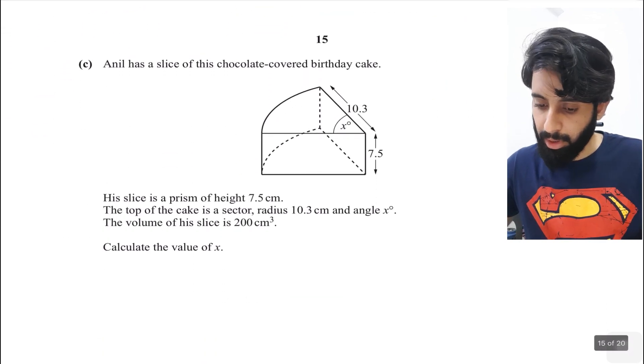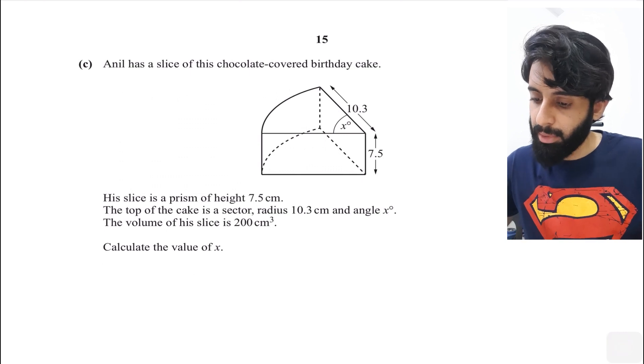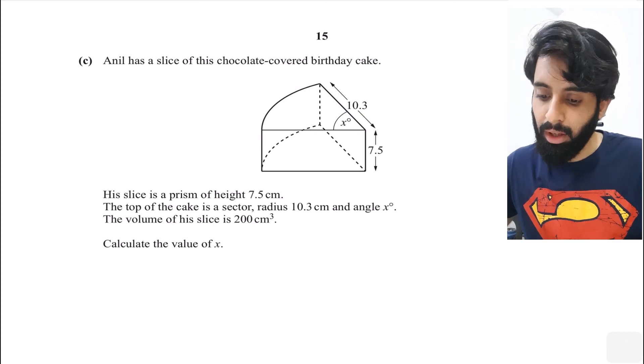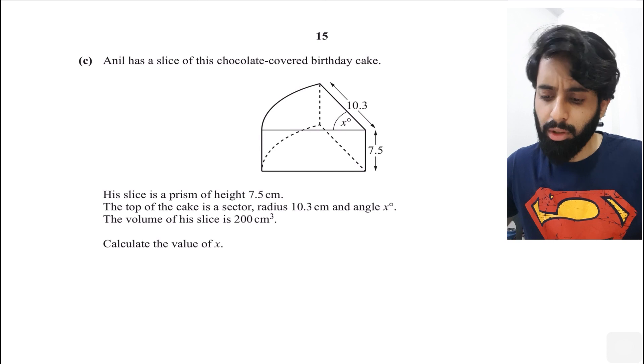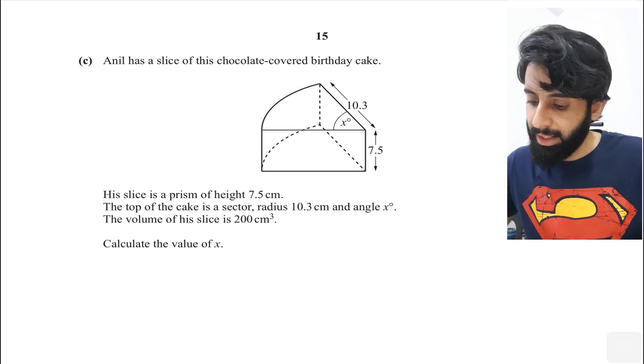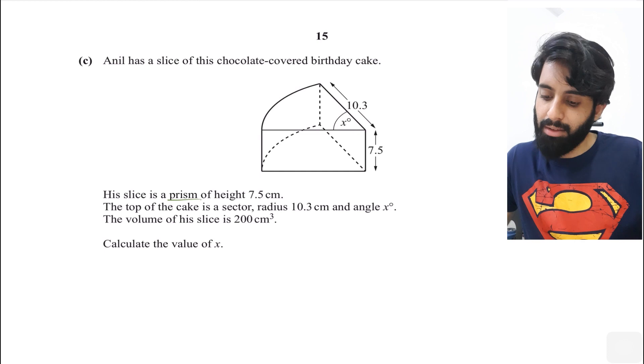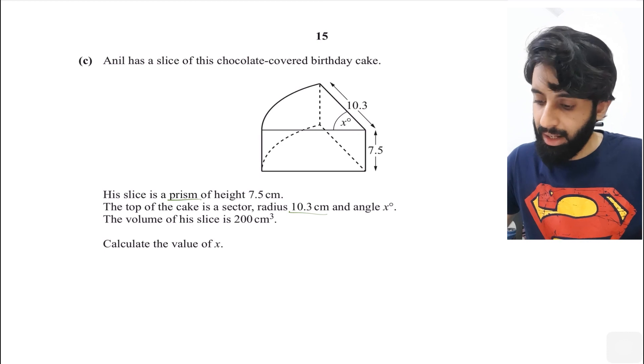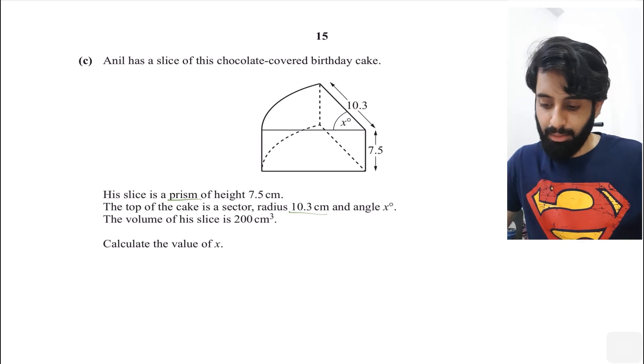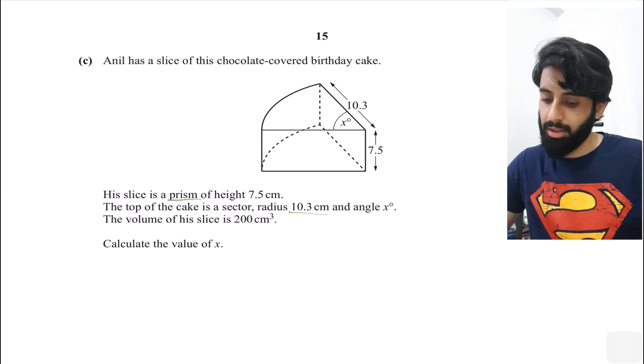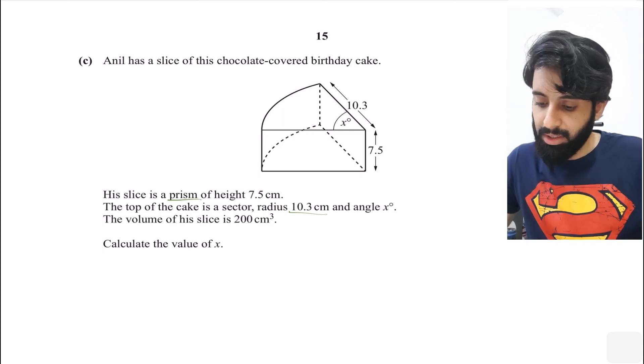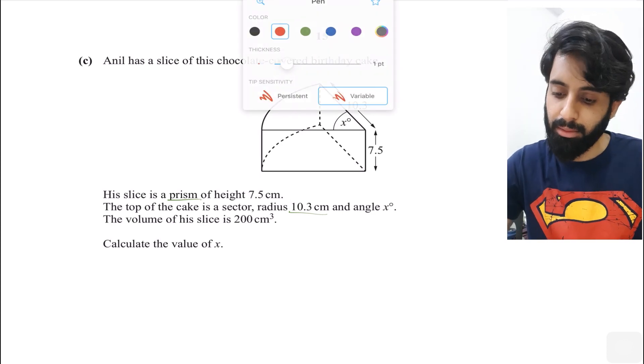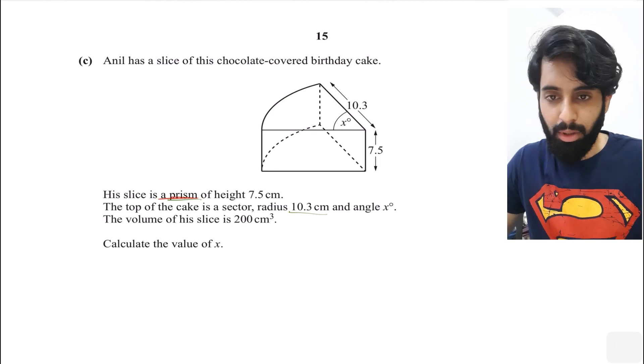Let's move to part C. Anil has a slice of this chocolate covered birthday cake. His slice is a prism of height 7.5 centimeters. The top of the cake is a sector of radius 10.3 and angle x. You can see that the height is 7.5 and the radius of the sector is 10.3. The volume of his slice is 200 cm³. The shape we're dealing with now is a prism.